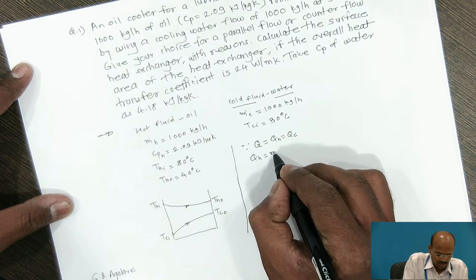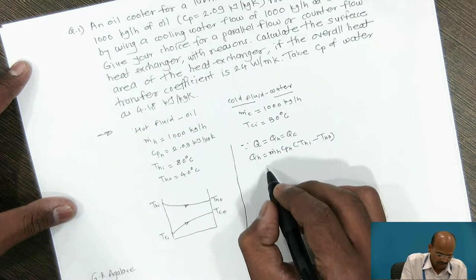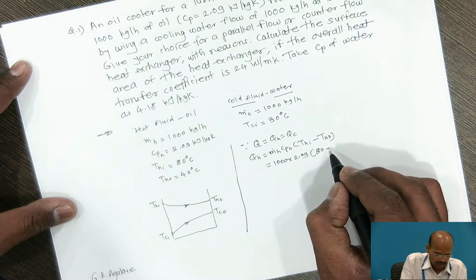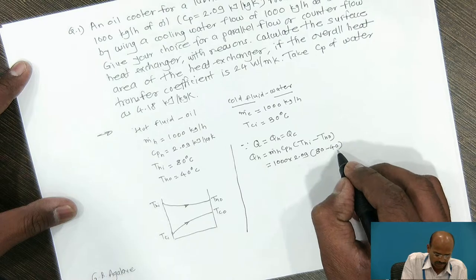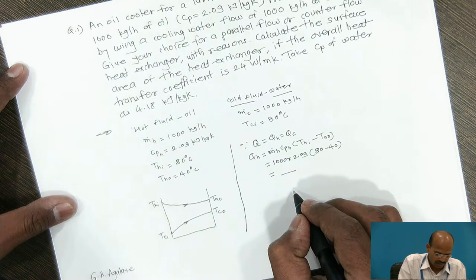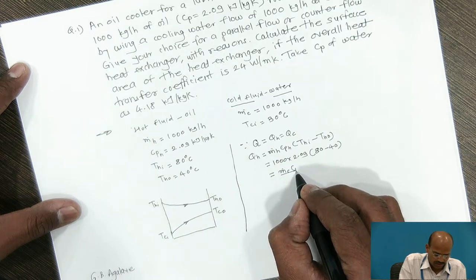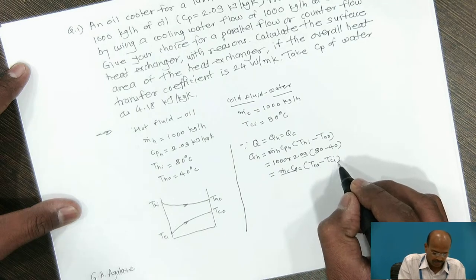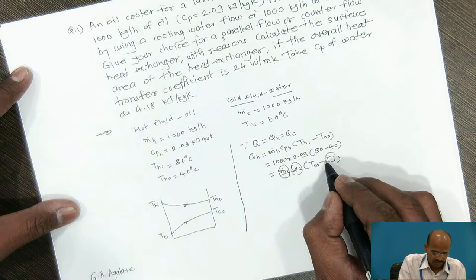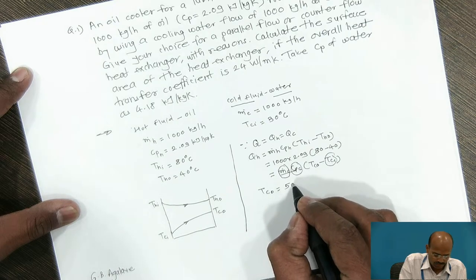Q_H equals m-dot_H · Cp_H · (T_HI − T_HO). Substituting T_HI = 80°C and T_HO = 40°C gives us the value of Q_H. Since Q_H equals Q_C, we write Q_C = m-dot_C · Cp_C · (T_CO − T_CI). Substituting the known values of m-dot_C, Cp_C, and T_CI, we get T_CO equal to 50°C.